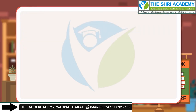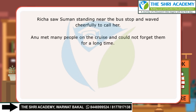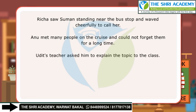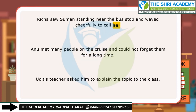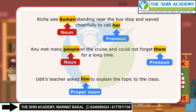Let us look at a few sentences. Richa saw Suman standing near the bus stop and waved cheerfully to call her. Anu met many people on the cruise and could not forget them for a long time. Uddit's teacher asked him to explain the topic to the class. In the first sentence, 'her' is a pronoun as it is used in the place of noun Suman. In the next sentence, 'them' is a pronoun as it is used in the place of the noun People. In the third sentence, 'him' is a pronoun as it is used in the place of noun Uddit.